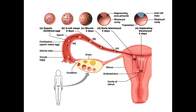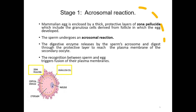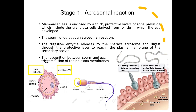This diagram shows a clearer image of the fertilization location in the fallopian tube. The first stage in fertilization is the acrosomal reaction. The mammalian egg is enclosed by a protective layer consisting of zona pellucida and the granulosa cells. To penetrate these layers, the sperm undergoes an acrosomal reaction. The digestive enzyme in the acrosome, located in the sperm head, is released to digest the protective layer to reach the plasma membrane of the egg. Fusion occurs between the plasma membrane of the sperm and the egg.